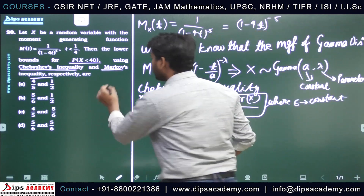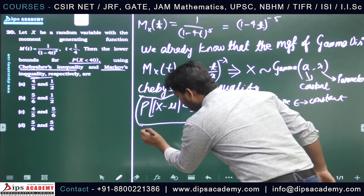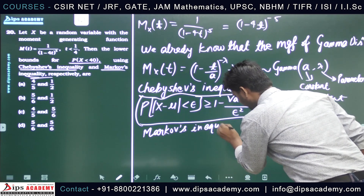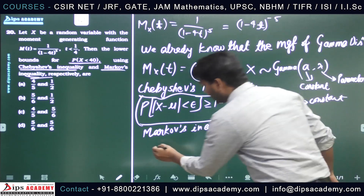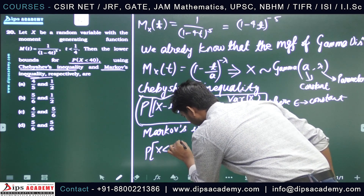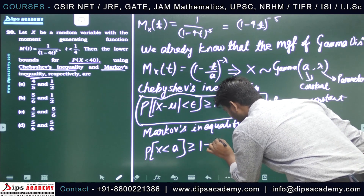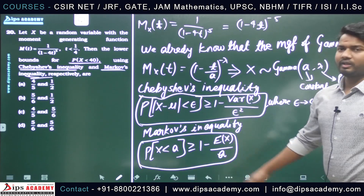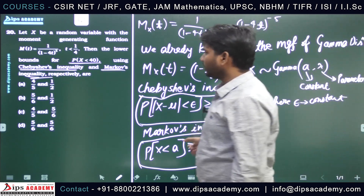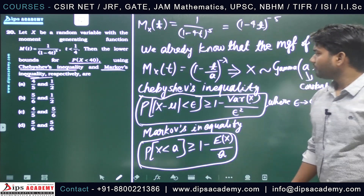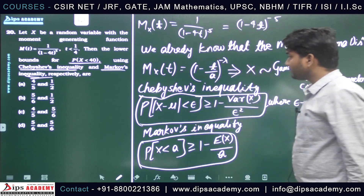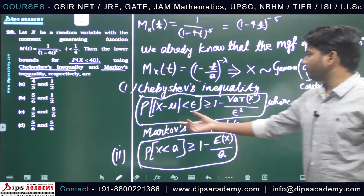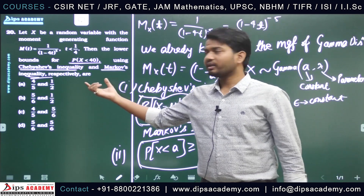And one more inequality is Markov inequality, which states: P(x < a) ≥ 1 - E(x)/a. Using these two formulas we will find the probability that x is less than 40, starting first with Chebyshev's inequality to find the lower bound.